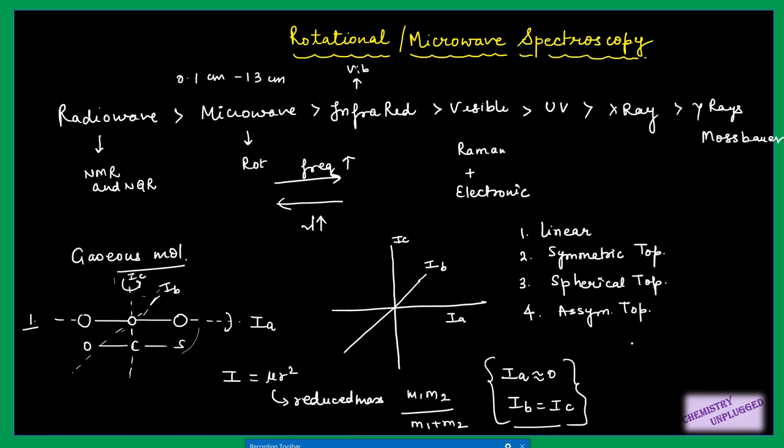Examples of linear molecules include CO₂, CO, and OCS. However, CO₂ will not show microwave spectroscopy because it doesn't have a permanent dipole moment. This is an important criterion — we will discuss later the selection rule to determine which molecules show microwave spectra.